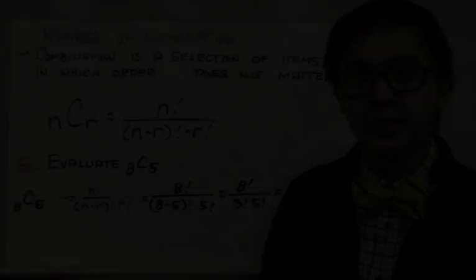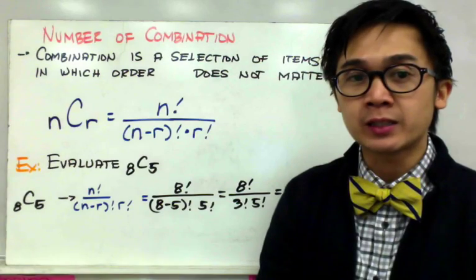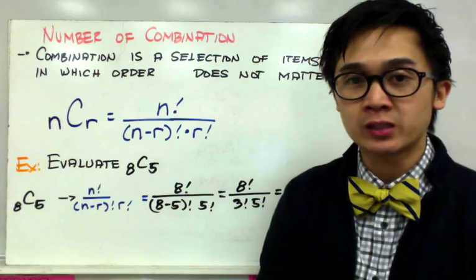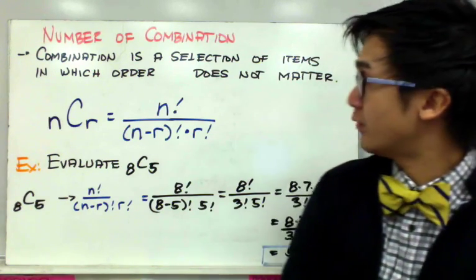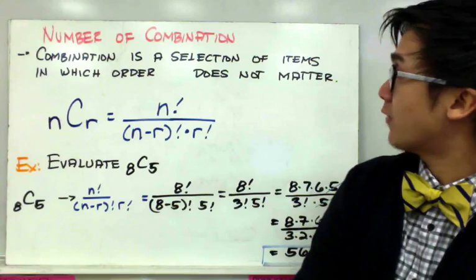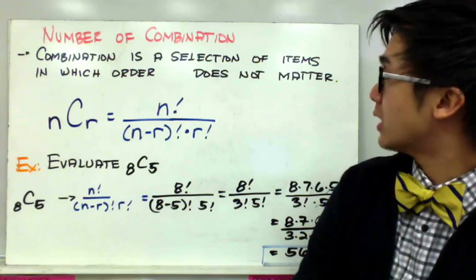The major difference between combination and permutation is that order in combination does not matter. By definition, combination is a selection of items in which order does not matter.